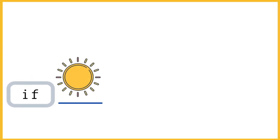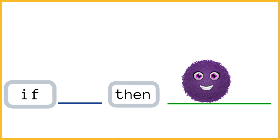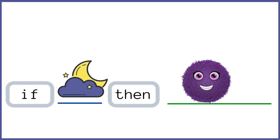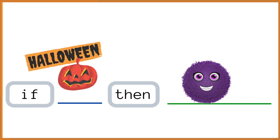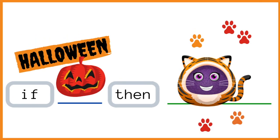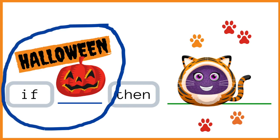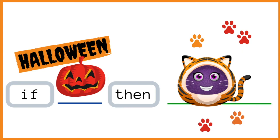If it is sunny, then you go outside. If you are tired, then you sleep. If it is Halloween, then you might dress up. All of these ifs are what keep life interesting. Your day will change based on the conditions around you and the choices you make in response. This is awesome because it means no two days are exactly the same.